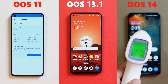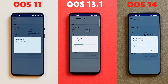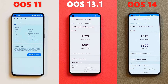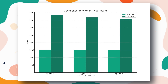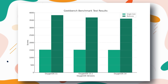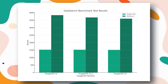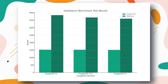Then we performed the Geekbench test. On OxygenOS 11, the single-core score was 1528 and multi-core was 3837. On OxygenOS 13.1, single-core was 1523 and multi-core was 3682. On OxygenOS 14, single-core was 1513 and multi-core was 3600. OxygenOS 11 again performed best among the three versions, with the highest scores in both single-core and multi-core tests. This indicates that in terms of raw processing power as measured by Geekbench, OxygenOS 11 outperformed the later versions OxygenOS 13.1 and OxygenOS 14.